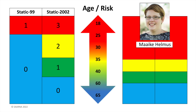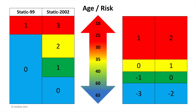Informed by the large 29-sample meta-analytic dataset, Helmus and colleagues introduced new age levels that made finer distinctions, especially for middle-aged people. Risk continues to remain high for young people through their 20s. In the late 30s, meaningful reductions in offending begin and continue until the 60s, where it evens off. Static scales with the "R" at the end of the year indicate the presence of the revised age item, and these revised scales outperformed the original versions with older adults.